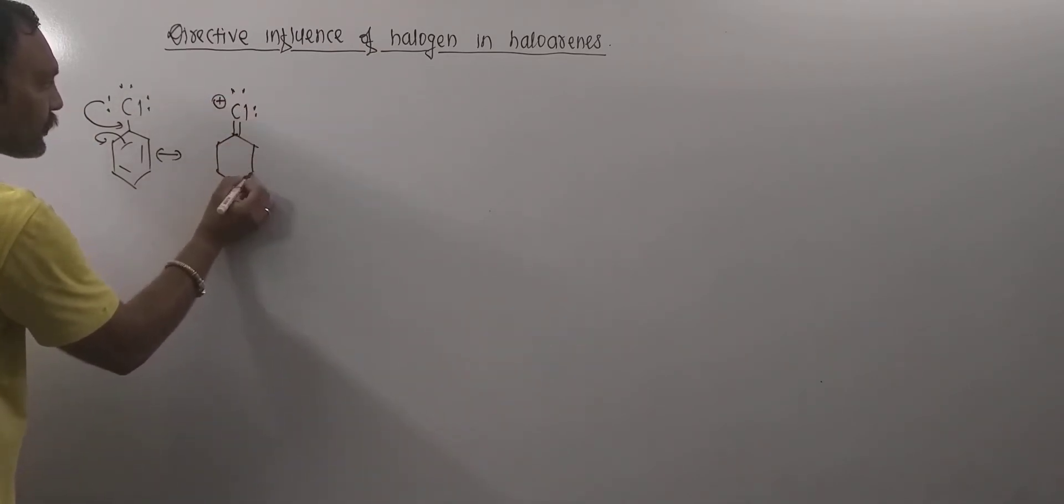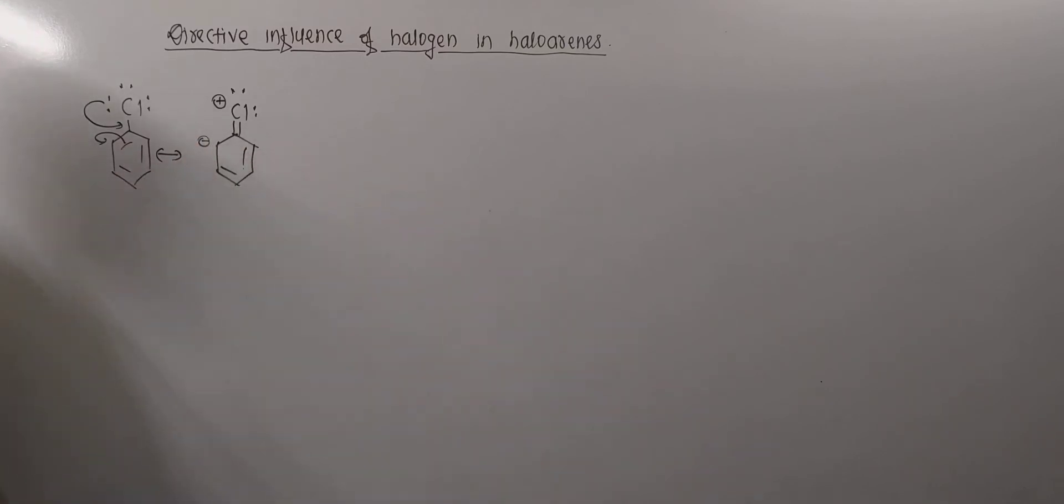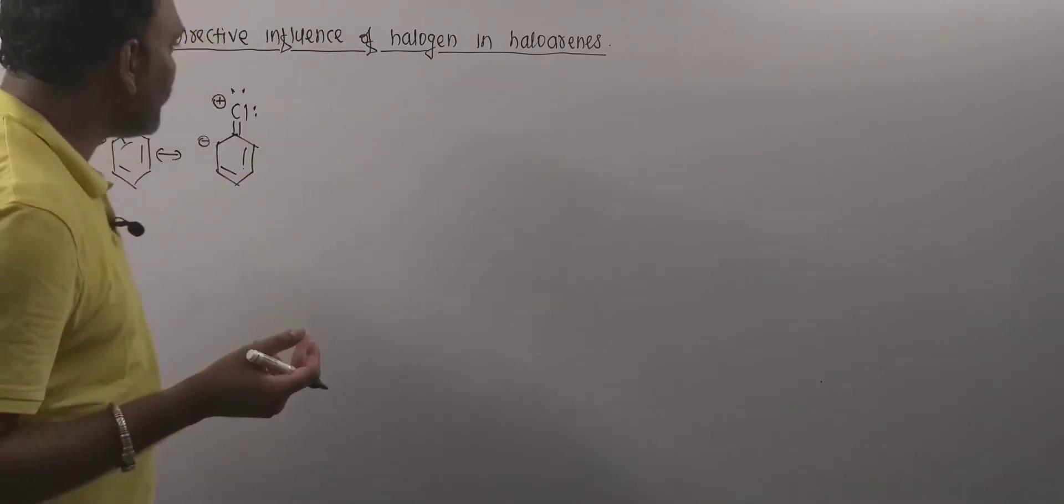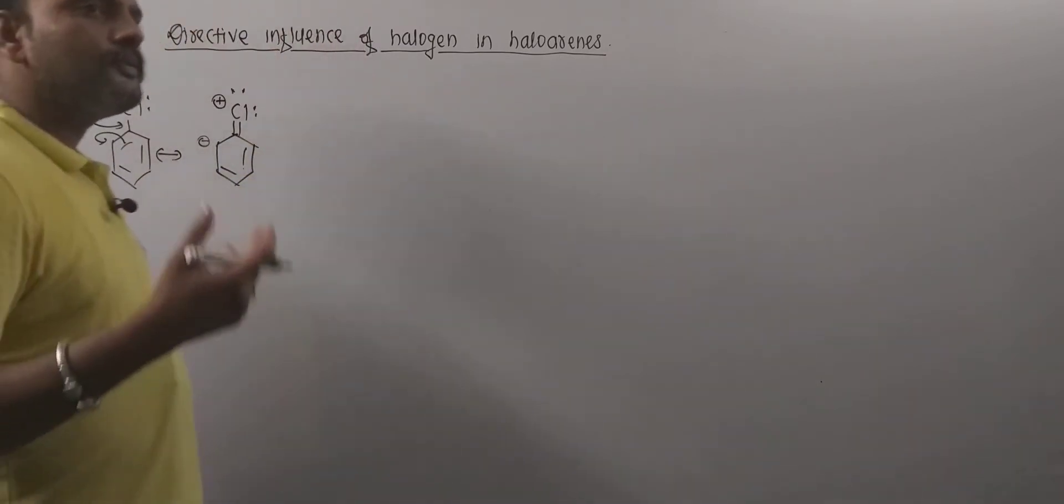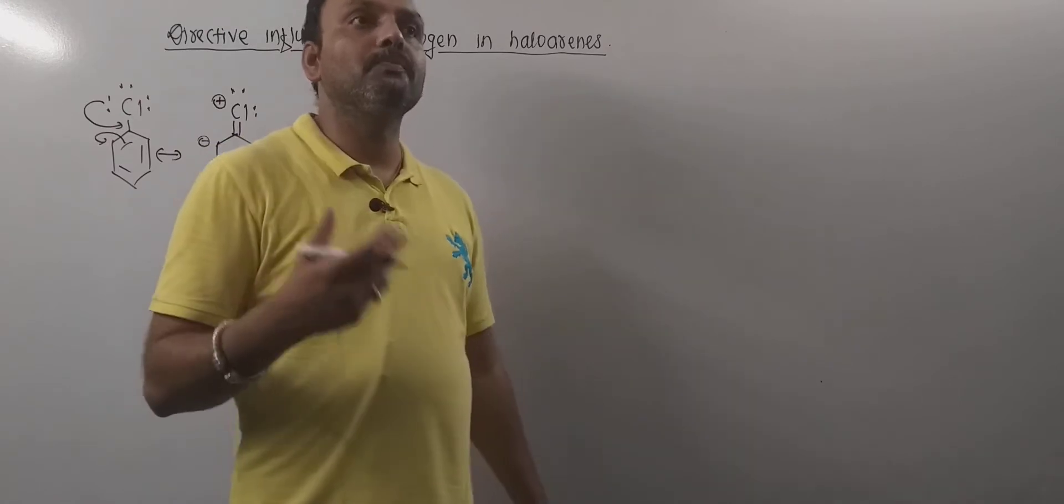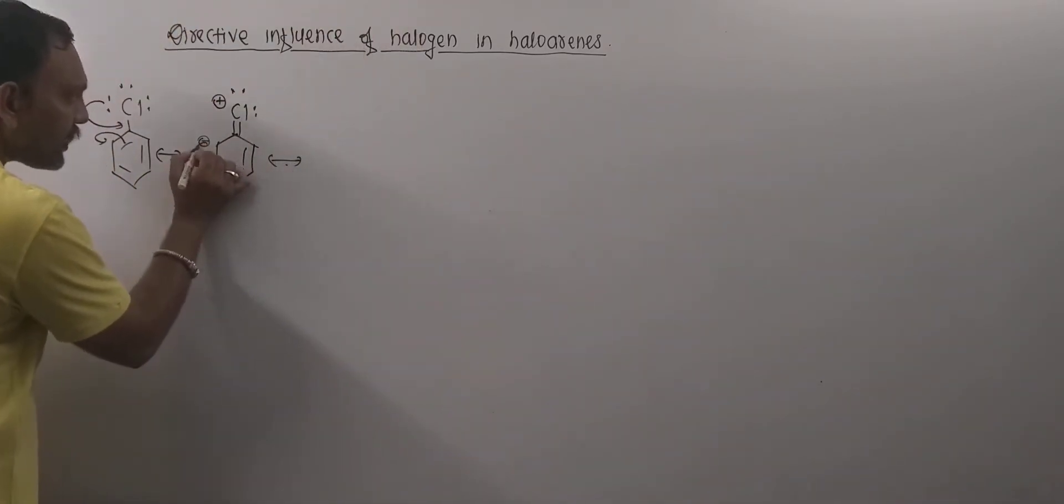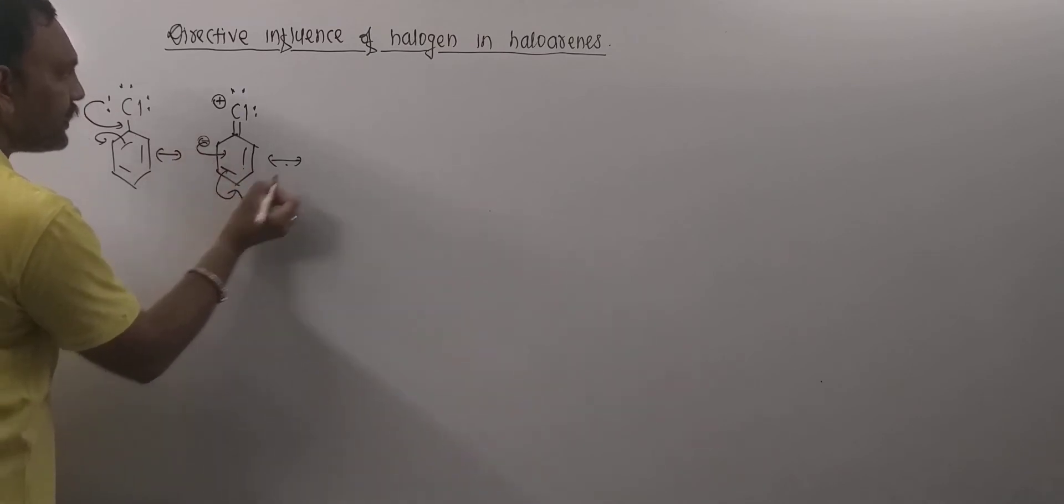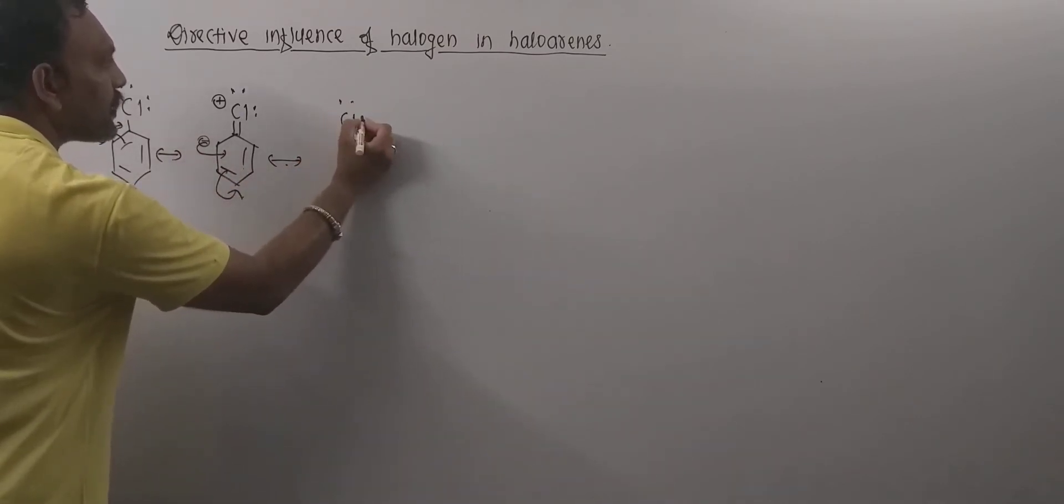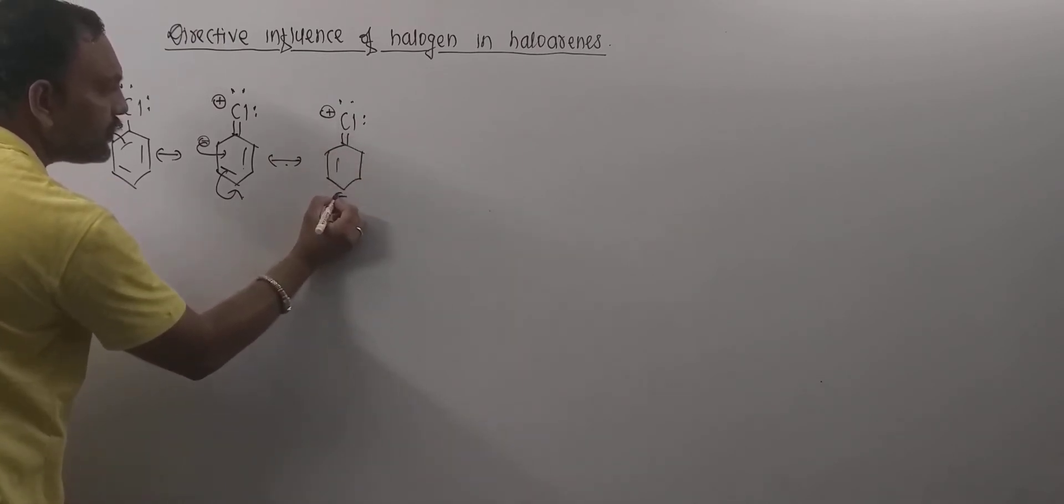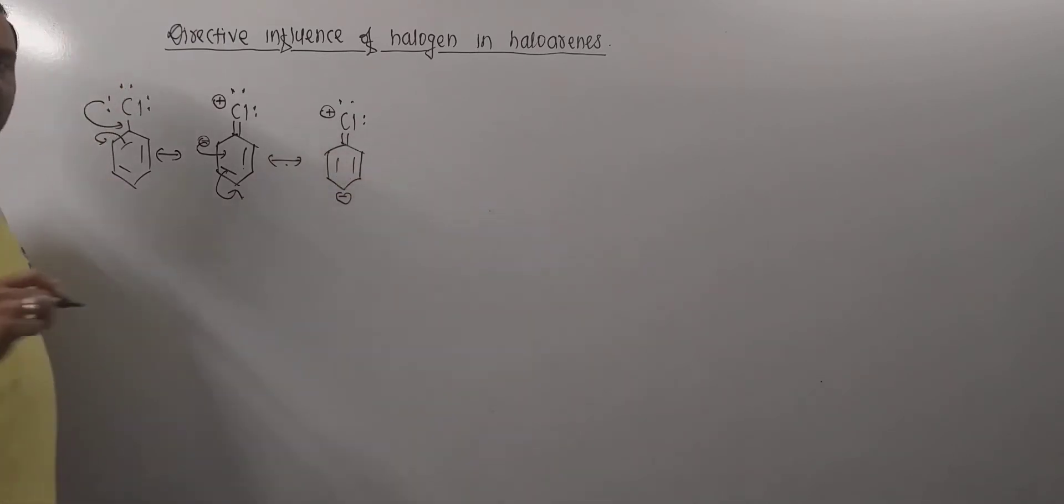So this is the resonating structure so obtained. Now we know very well if charge is stagnant, then no species will be stabilized and every species tends to get stable. Therefore, another resonating structure can be drawn in this way. The next resonating structure can be drawn here.